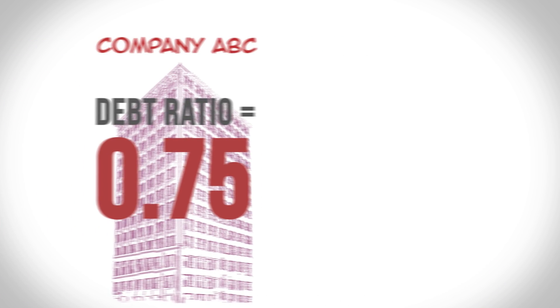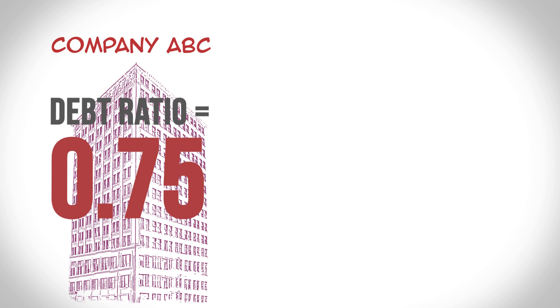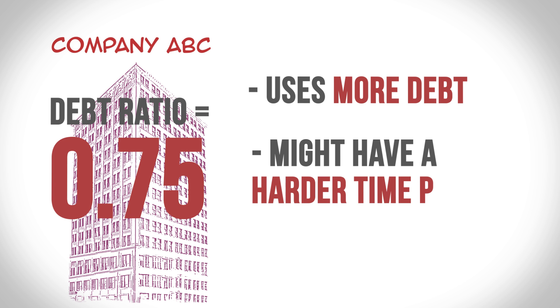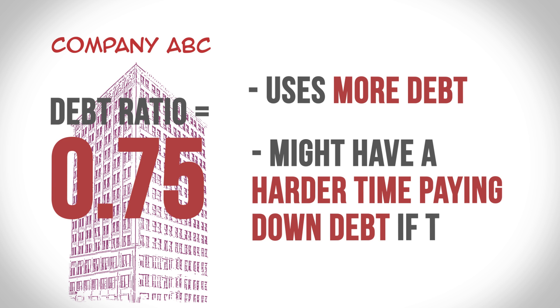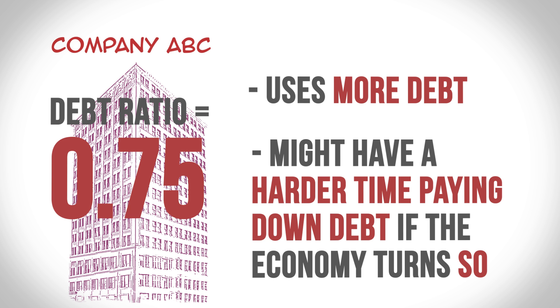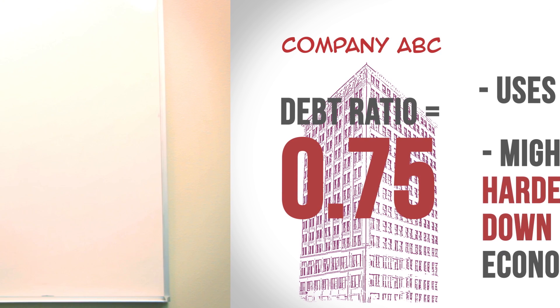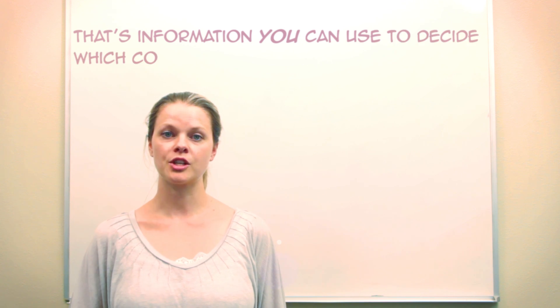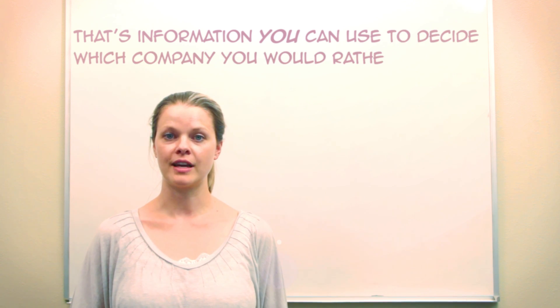Competitor ABC's higher debt ratio tells us that ABC uses more debt, and more importantly, ABC might have a harder time paying down all that debt if the economy turns south. And that's information you can use to decide which company you'd rather invest in.